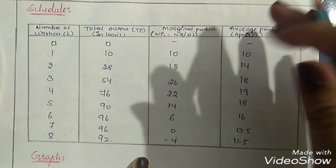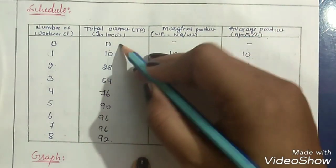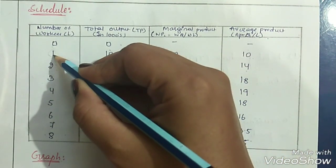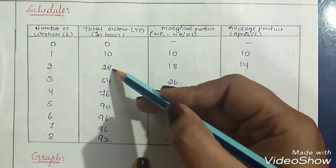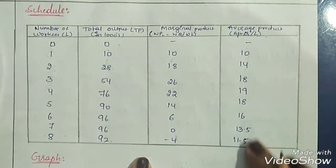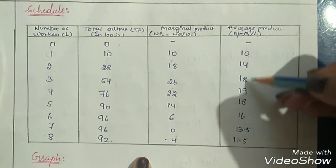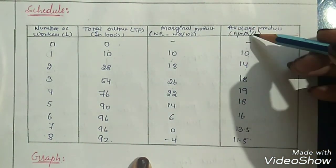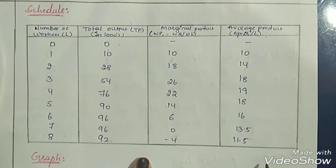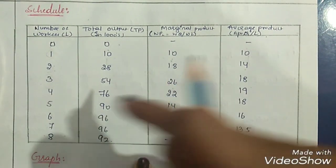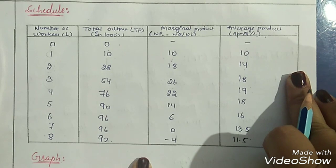For average product, which is total product divided by number of labors: 10 divided by 1 is 10, and 28 divided by 2 is 14. Average product also increases up to a certain point. When marginal product starts to fall, average product will also start to decline. However, marginal product can be negative, but total product and average product cannot be negative.